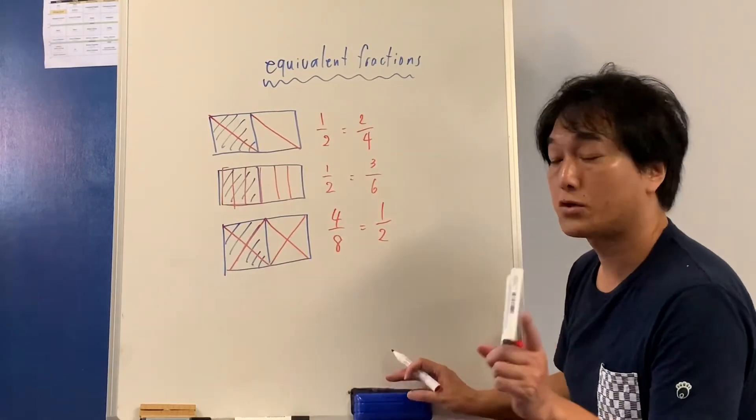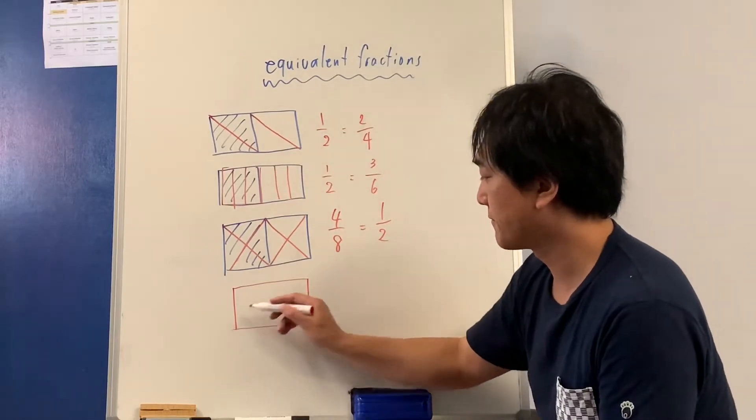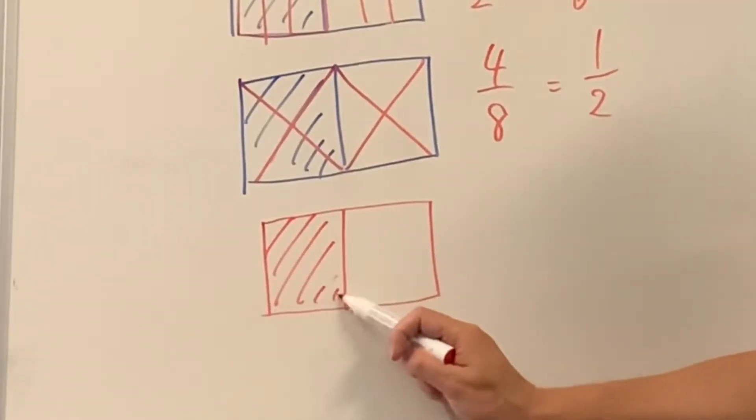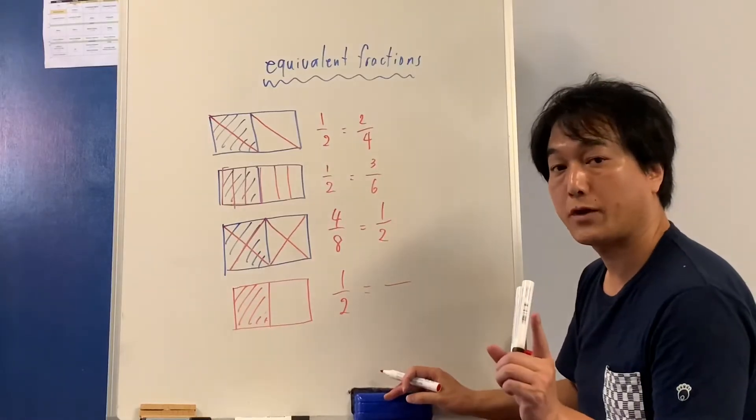Your turn. Let's draw one half. Let's cut each piece into certain pieces. Let's see if you can find a new equivalent fraction. Let's pause the video.